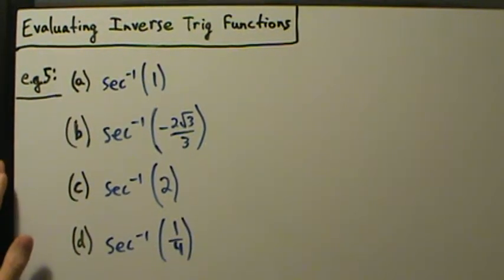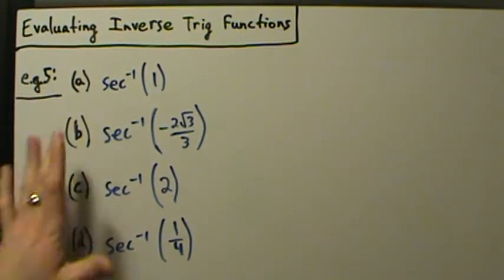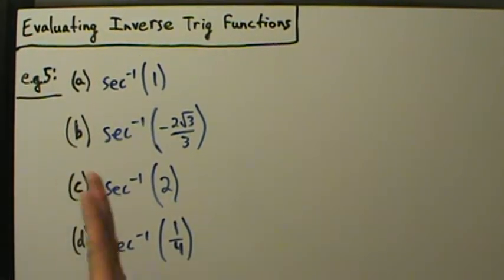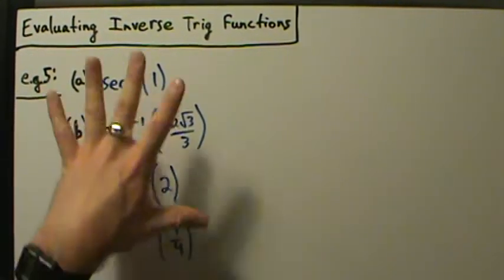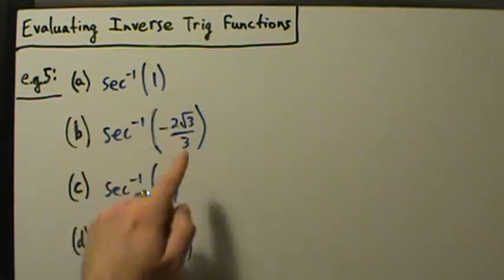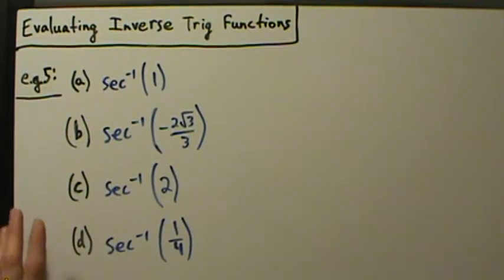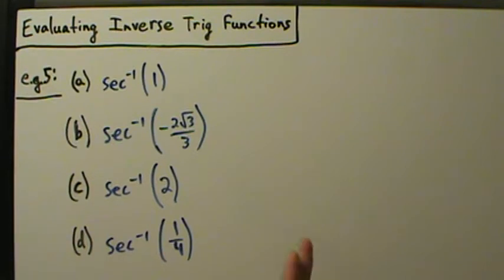Here's example 5 with evaluating inverse trig functions. This is the inverse secant function. It might look a little more complicated with these numbers, but it really won't be that bad. We can actually just relate it back to the cosine function, and everything will be easier. We can just look at the unit circle again.